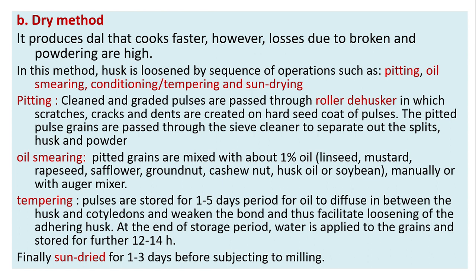Tempering: pulses are stored for one to five days to allow the oil to diffuse between the husk and cotyledons and weaken the bond, thus facilitating loosening of the adhering husk. At the end of the storage period, water is applied to the grains and stored for 12 to 14 hours. Finally, the grains are sun dried for one to three days before subjecting to milling.